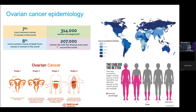Worldwide, ovarian cancer is the seventh most common cancer in women, and as we just mentioned, one of the top leading causes of death. More than 300,000 women are diagnosed every year, and more than 200,000 women will die from this disease. This relatively high mortality rate is related to the fact that the majority of ovarian cancer cases are diagnosed at rather late stages — stage 3, when the cancer has spread within the abdomen, or stage 4, when there are already distant metastases. You can see that if discovered early it has a very high survival and good prognosis, but it drops dramatically at stage 3 and especially stage 4.